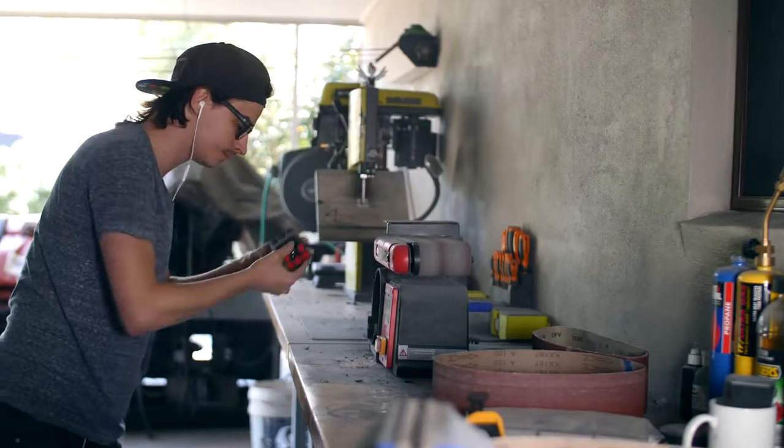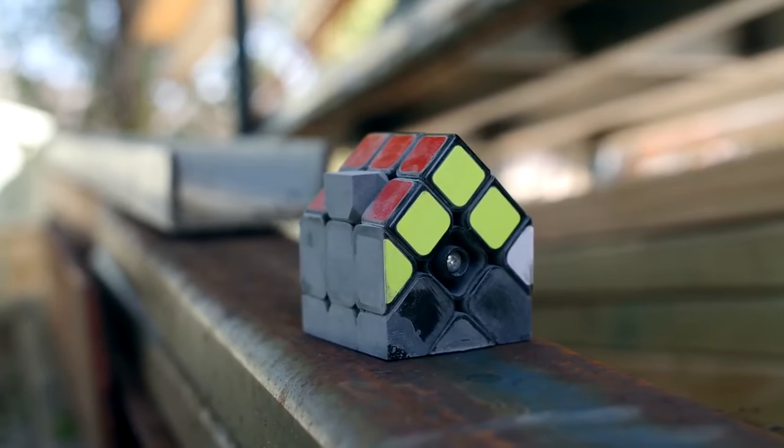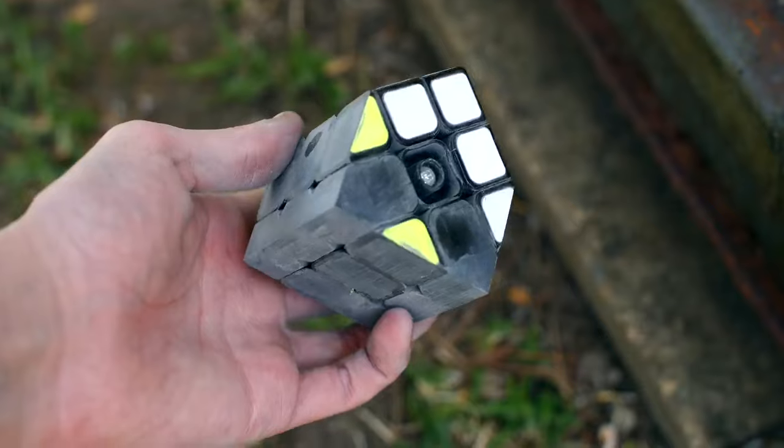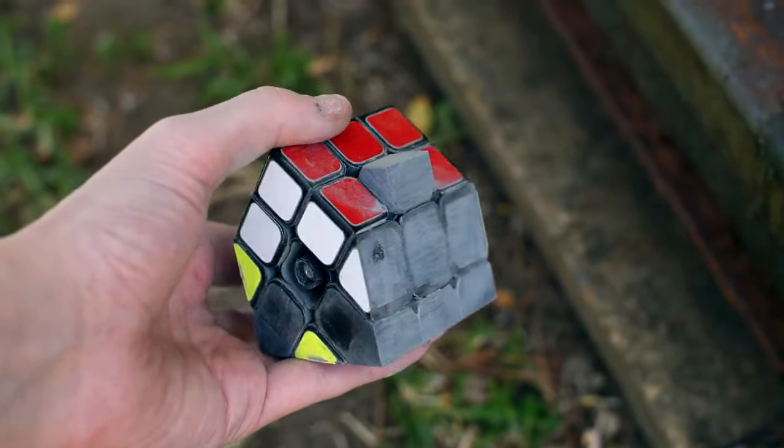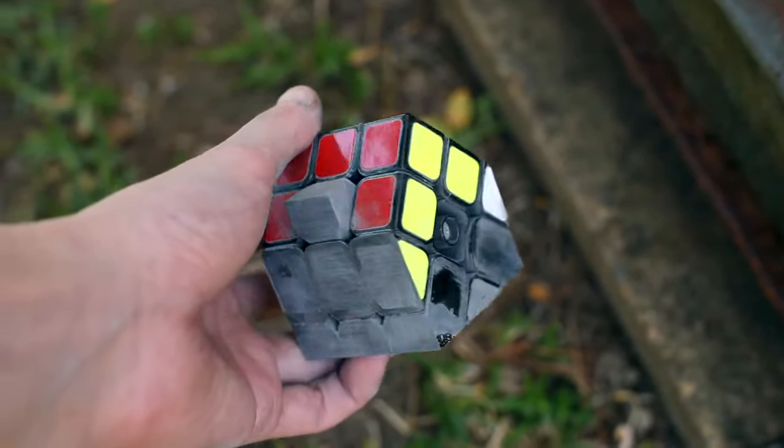After I'd finished sanding everything, this is what the inverted house cube looks like without any more modification done to it. If I really wanted to, I could take off the last of those stickers, sand everything down, and sticker everything up.